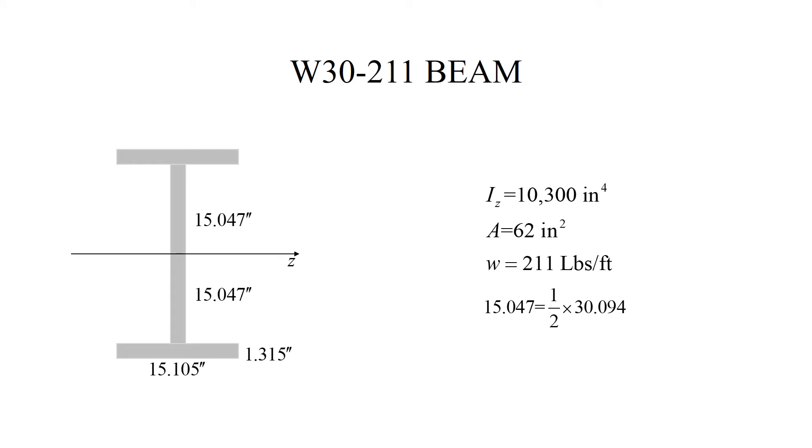Let me summarize basic data for W30-211 beam. Everything comes from tables. You can see that the web is 30 plus inches. The flange is 15.105 by 1.315. And the plates chosen for the reinforcement are exactly equal in size to the sizes of the flanges. From tables, I can get the moment of inertia about the z-axis, the area, the weight. Please pay attention to this, 211. And in the tables, we have 13.094 given as the height of the web.